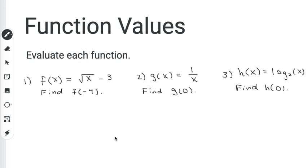So for the first question, they give me f(x) is equal to the square root of x minus 3, and they asked me to find f(-4). So what I'm going to do is replace x with a negative 4 and see what happens.